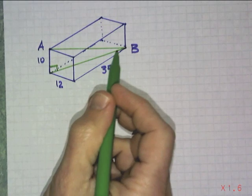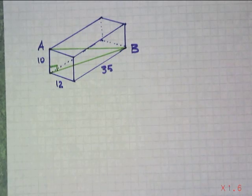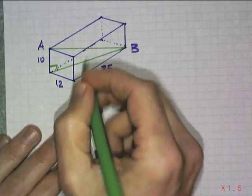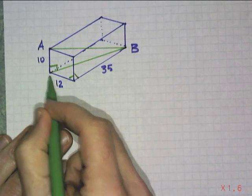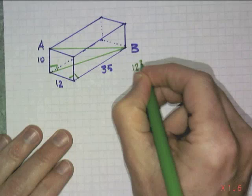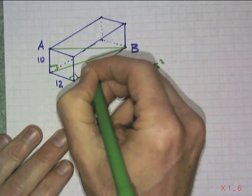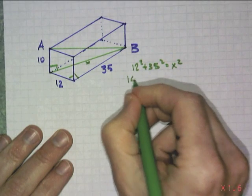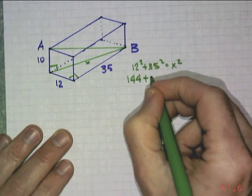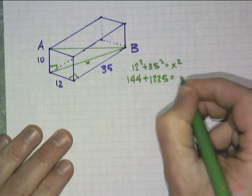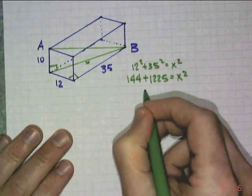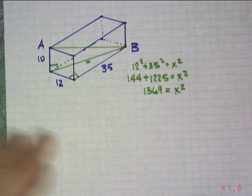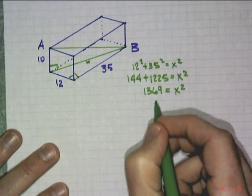If we can find that diagonal, then we can use that and the Pythagorean Theorem to find A to B. This is nothing more than a right triangle on its face with side lengths of 12 and 35. So we can go 12 squared plus 35 squared — I'll call that x — equals x squared. That's 144 plus 1225 equals x squared. Add those up, that's 1369 equals x squared. Take the square root of 1369, and it turns out that's 37.